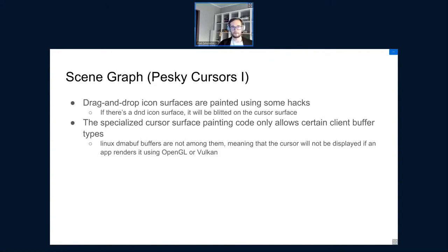Another painful aspect of the current scene design is that it doesn't work well for cursors. KWin has surface-role-specific painting code, and it sometimes doesn't work for drag-and-drop icons. Another outcome of this is that KWin can only paint cursors with certain client buffer types. For example, Linux dmabuf buffers are unsupported, which means that if a video game paints cursors using OpenGL or Vulkan, you won't see that cursor because KWin doesn't understand it. This is a violation of protocols and we need to fix it.